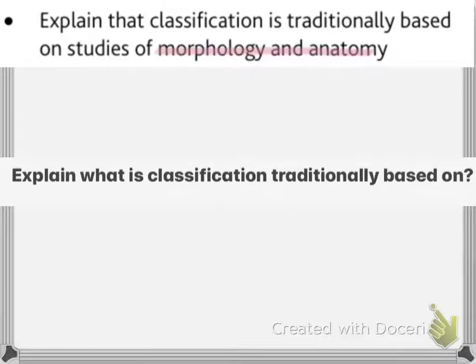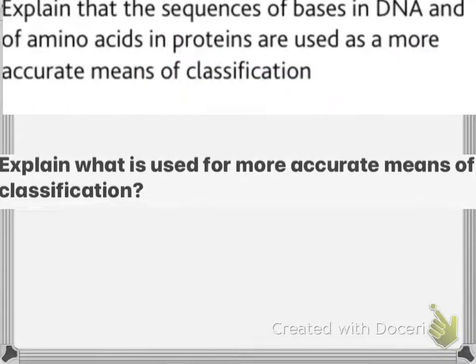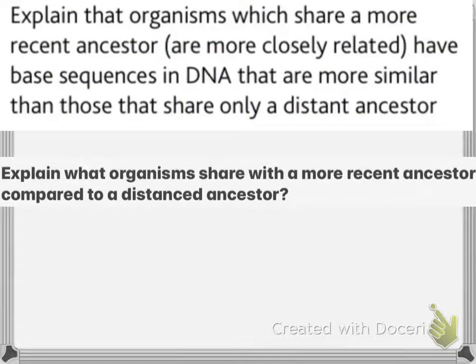Anatomy is the detailed body structure found through dissection. For more accurate classification, sequences of bases in DNA and amino acids in proteins are used. These are more precise means of classification than morphology alone.